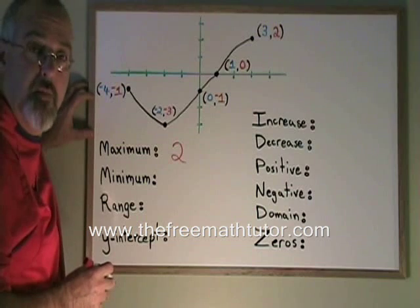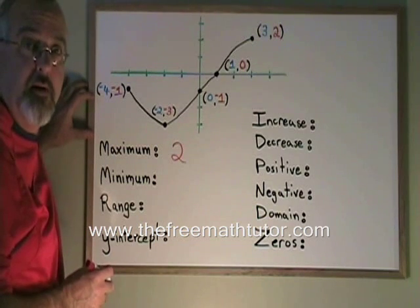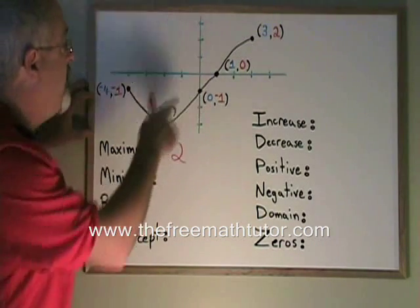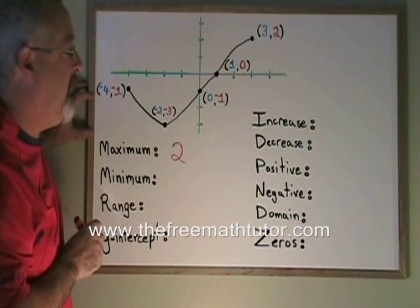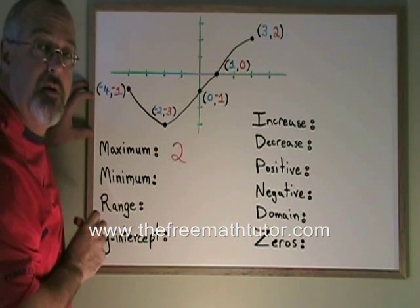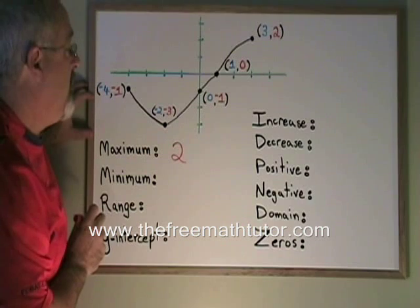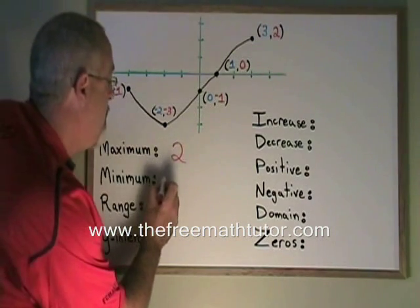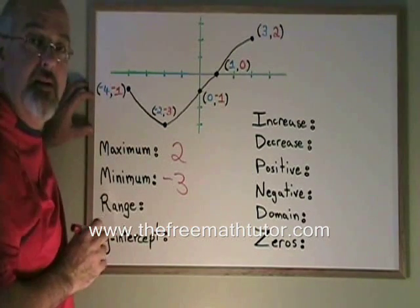The minimum works the same way, except it's the lowest point. The lowest point that this curve reaches is right here at negative 2, negative 3. We use the y-coordinate again. The lowest point the curve reaches is negative 3. That is its minimum.